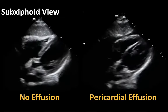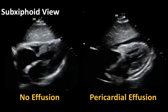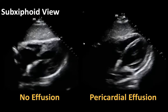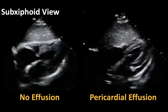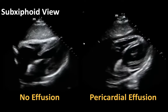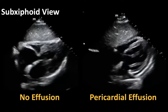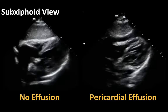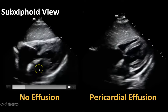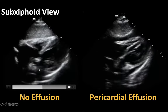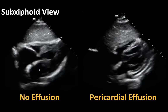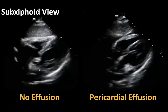Just a reminder from the last lecture — this is where you're going to take your probe really in the upper part of the patient's belly and angle it towards the patient's left shoulder, so you're cutting through the liver to get to the heart. You're going to have it at a pretty flat angle so you're going under the xiphoid process to get to the heart.